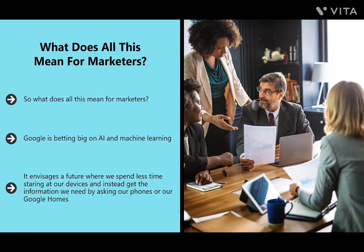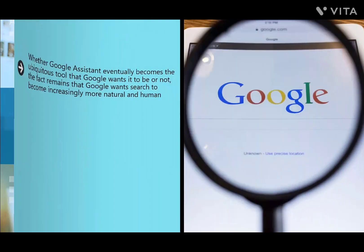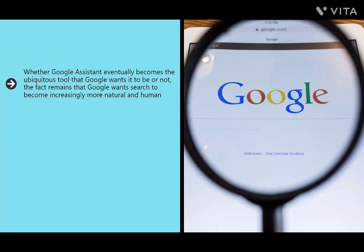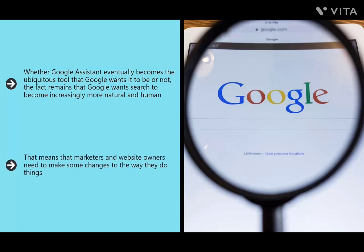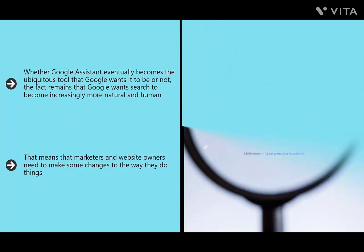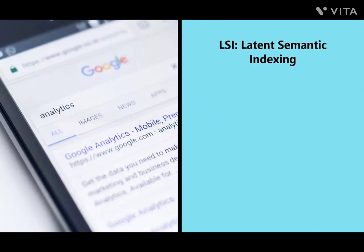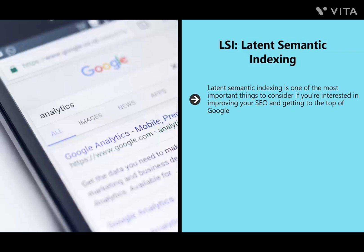Whether Google Assistant becomes ubiquitous or not, the fact remains that Google wants search to become increasingly natural and human. That means marketers and website owners need to make changes. It's no longer enough to find a keyword and repeat it. You now need to work as though you're speaking with an AI. One of the most important things to consider is LSI — Latent Semantic Indexing — especially if you hope to be ready for Google's AI-driven future.